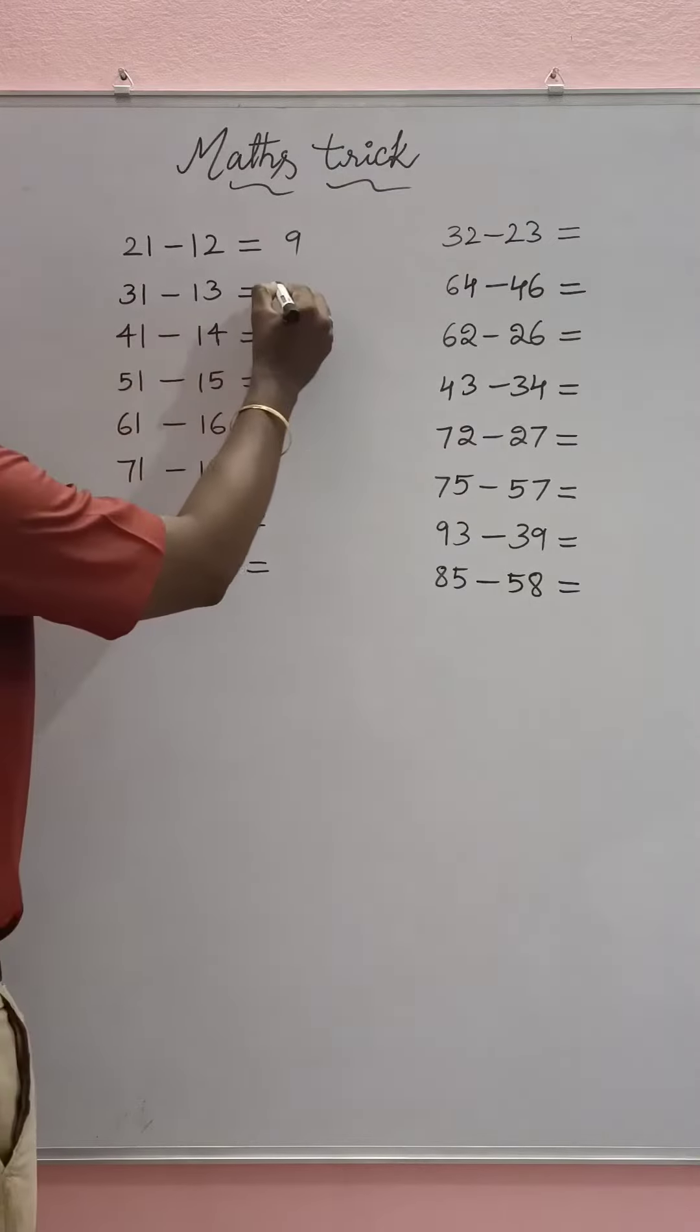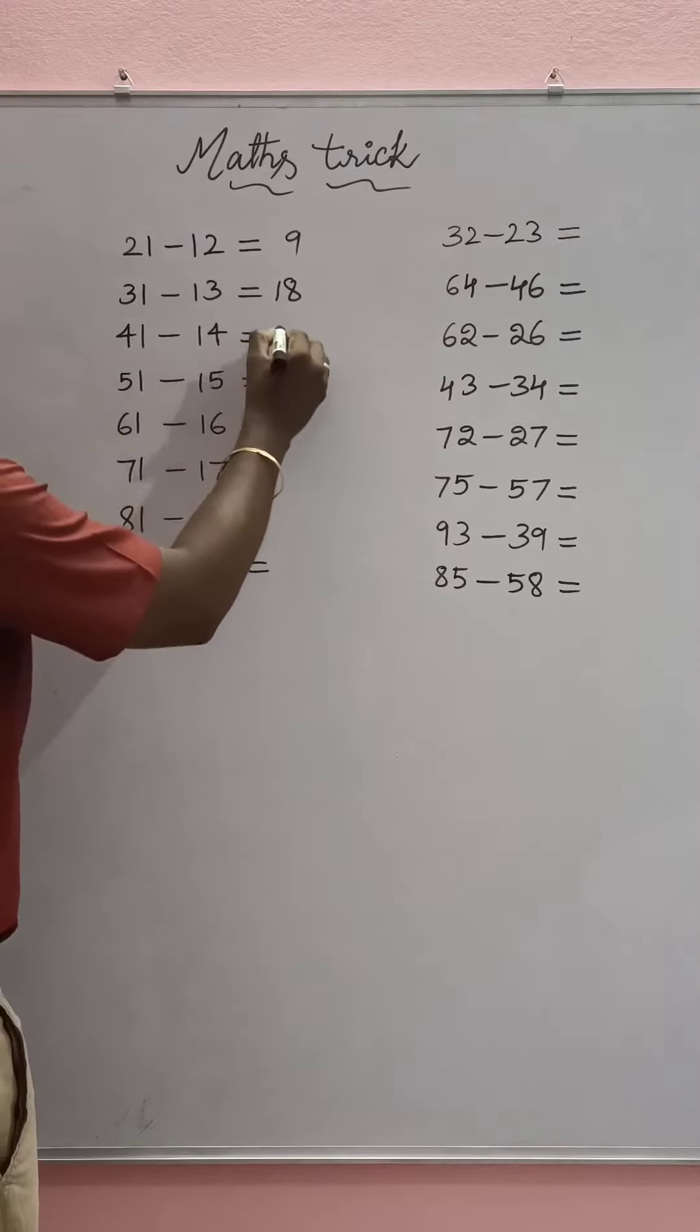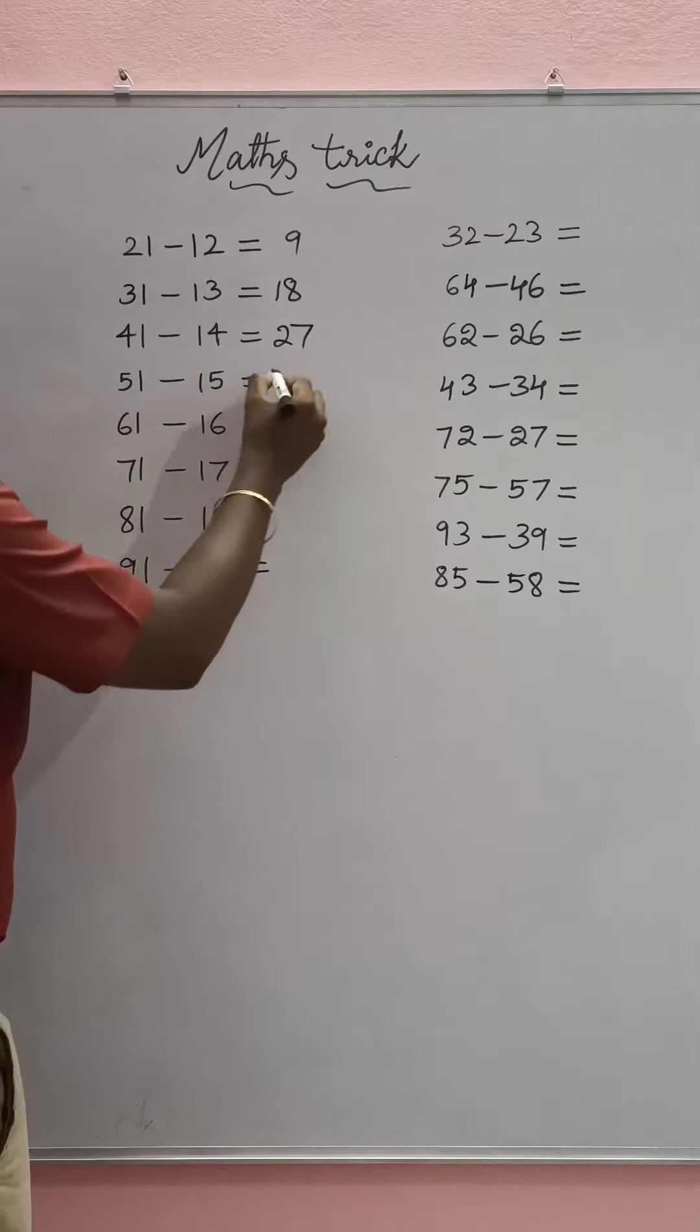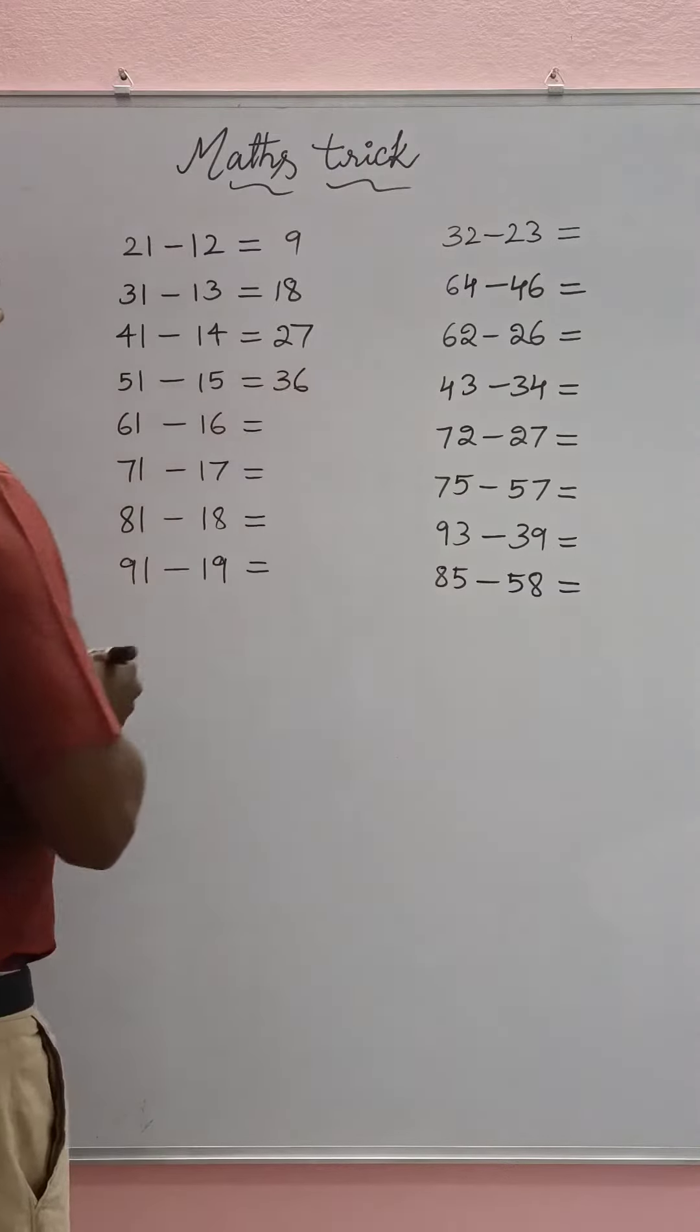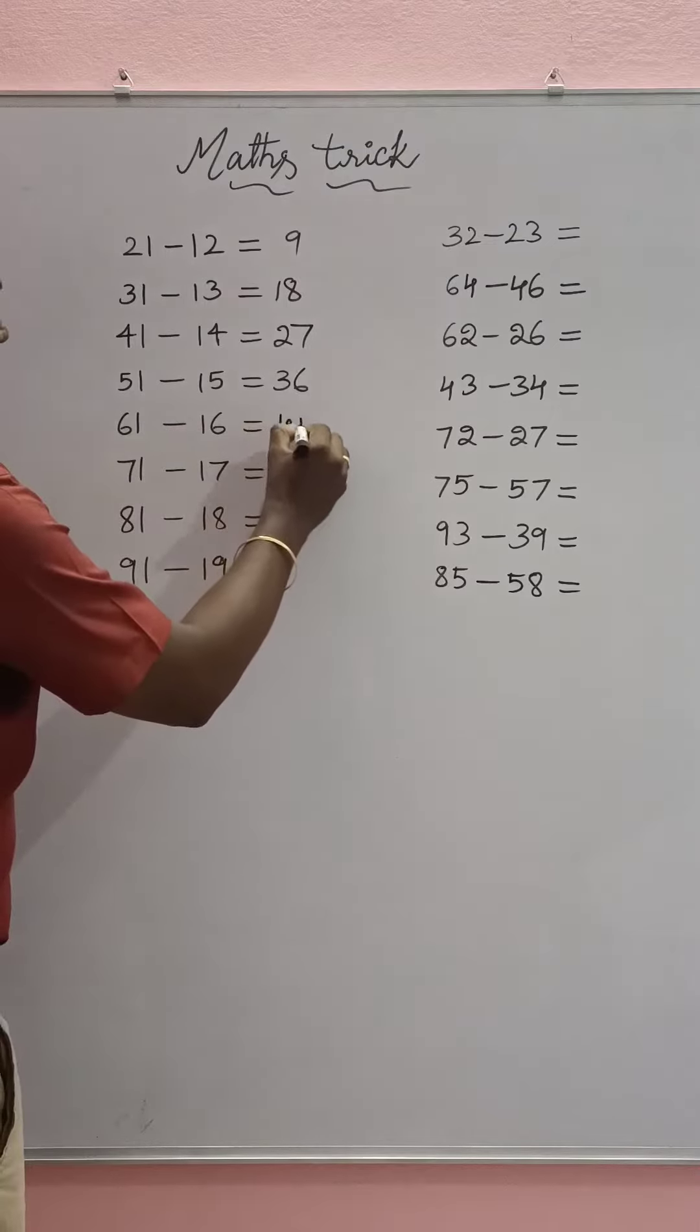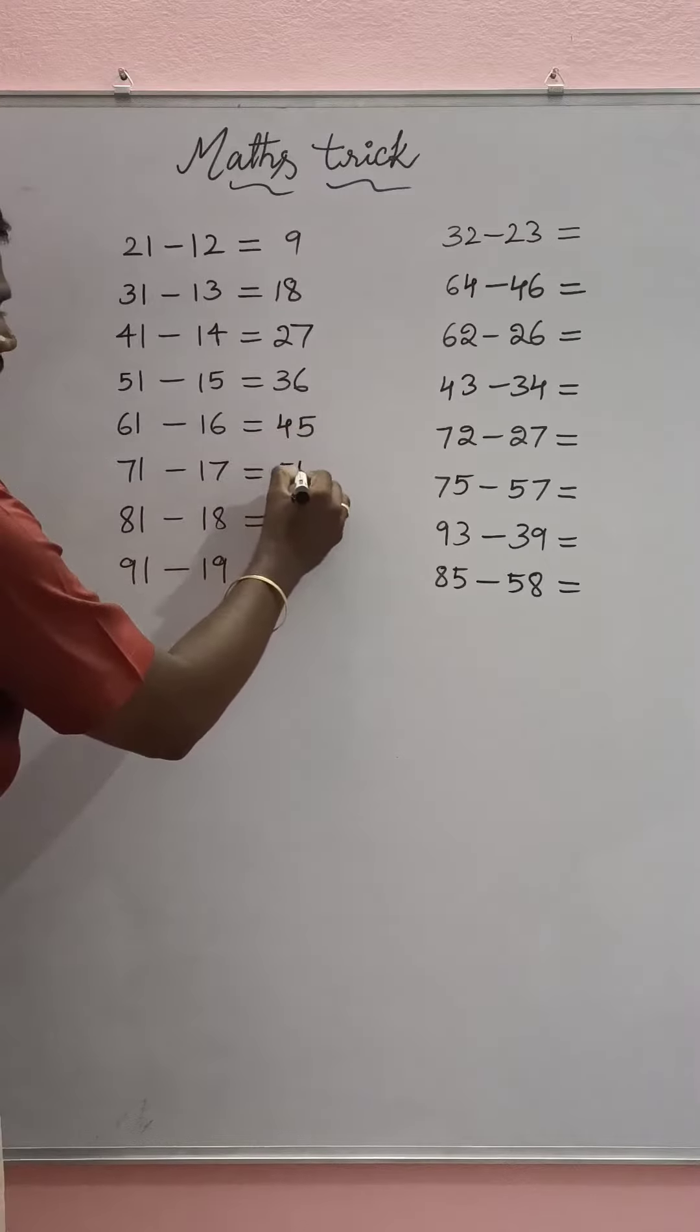31 minus 13 equals 18, 41 minus 14 equals 27, 51 minus 15 equals 36, 61 minus 16 equals 45, 71 minus 17 equals 54.